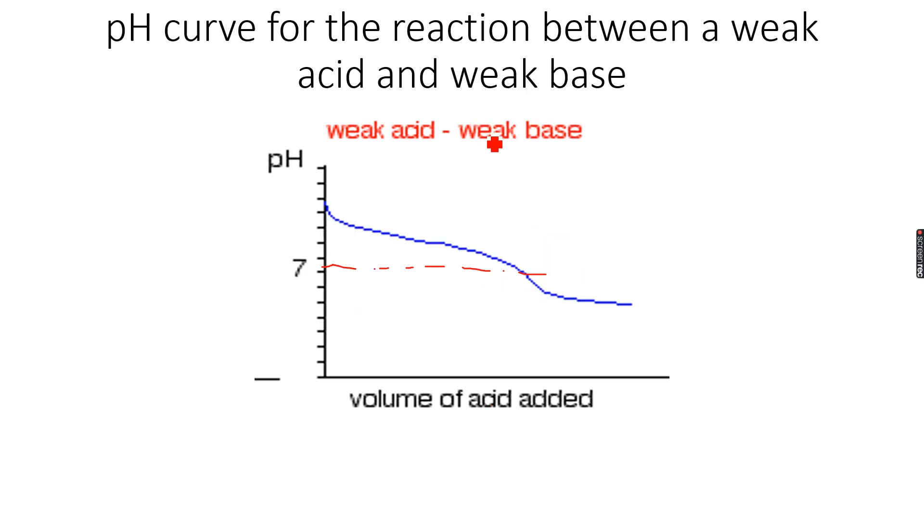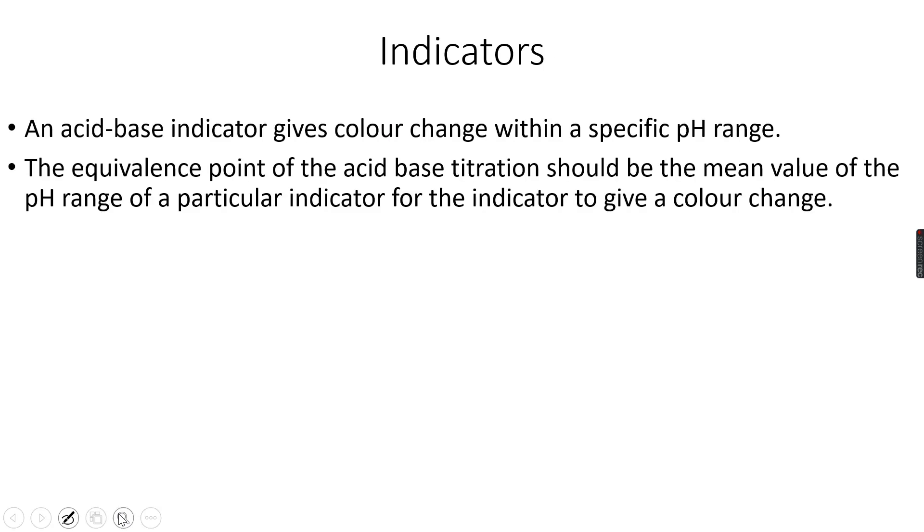For a weak acid and a weak base, let's take the equivalence point as 7, so this will be 6.5 and this will be 7.5. I want a color change between 6.5 and 7.5, so I can use the same indicator that I used for strong acid and strong base because the pH range over which I want a color change is the same. This is it for indicators and pH curves.